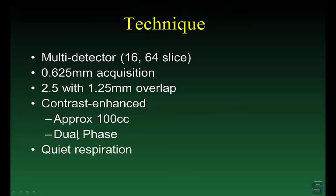Let's talk a little bit about technique. The larynx is so much easier than it used to be. Back when I was a fellow, we'd have different protocols for different types of laryngeal pathologies, but now it's pretty simple. It's multi-detector imaging, whether you have a 4, 8, 16, or 64 slice. We always acquire everything now at 0.625 millimeters, sometimes reconstructed at 2.5 or 1.25 millimeters.